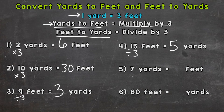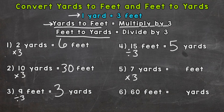Number five: seven yards equals how many feet? We need to think about whether we multiply or divide. Think yardsticks — we have seven yardsticks and each is three feet. So three feet, seven times. We solve that by doing seven times three — seven groups of three — and that gives us twenty-one feet.